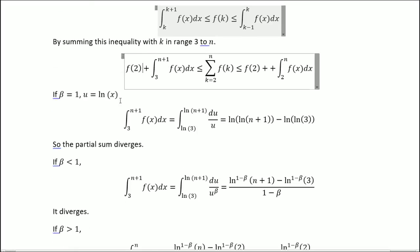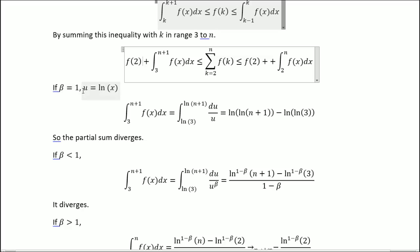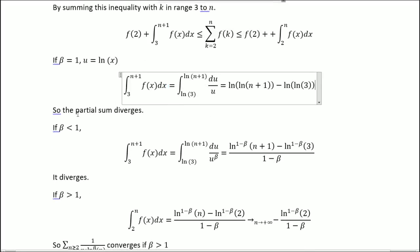So we'll take the case where beta equals 1, and make the substitution u equal ln of x. So this integral becomes this, and by replacing we get this. So the partial sum diverges because in plus infinity, this diverges. Because ln of something to infinity is infinity.